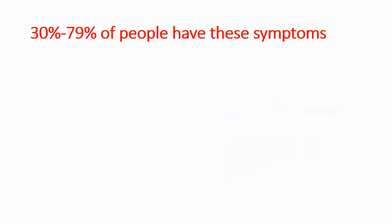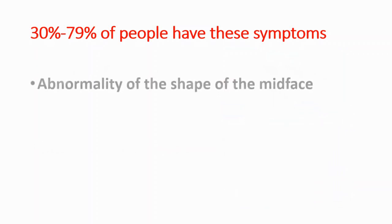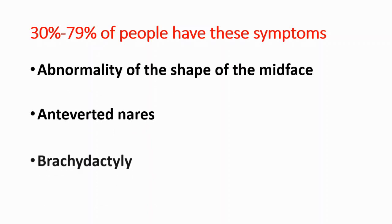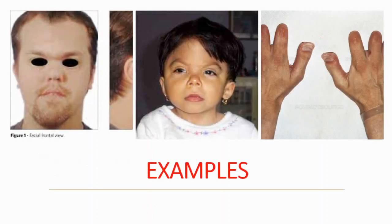30–79% of people have these symptoms: abnormality of the shape of the mid-face, anteverted nares, and brachydactyly — which means short fingers.